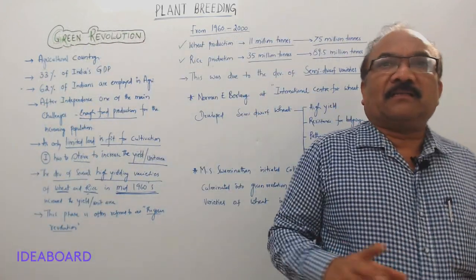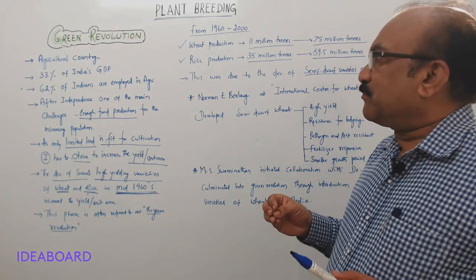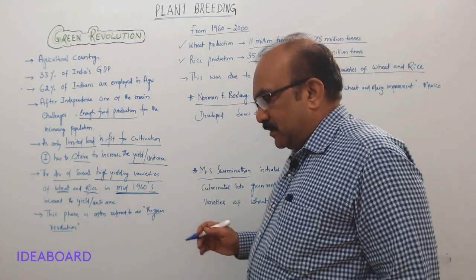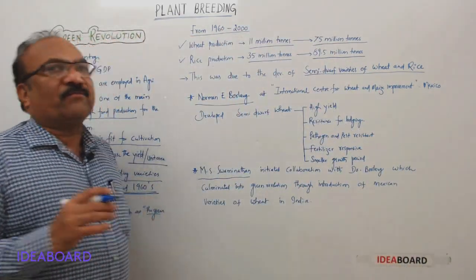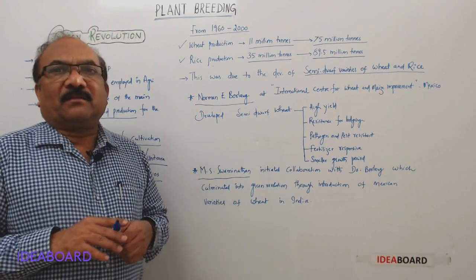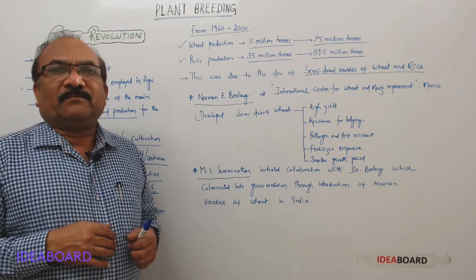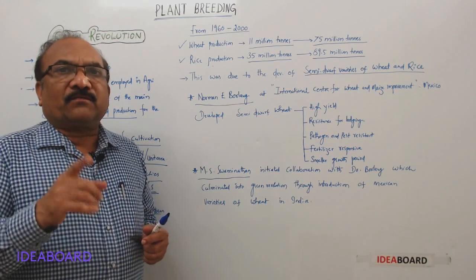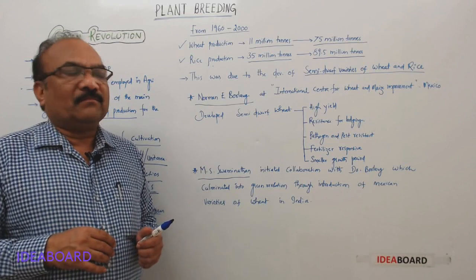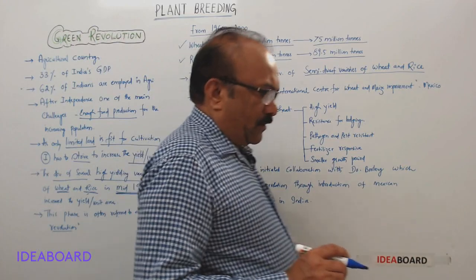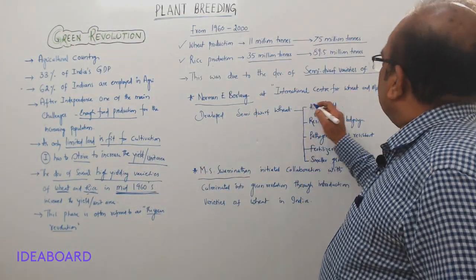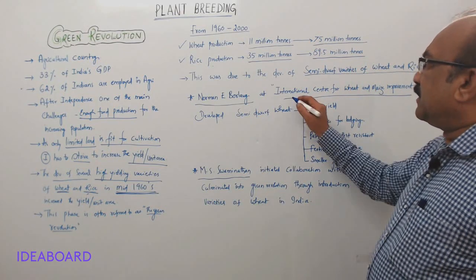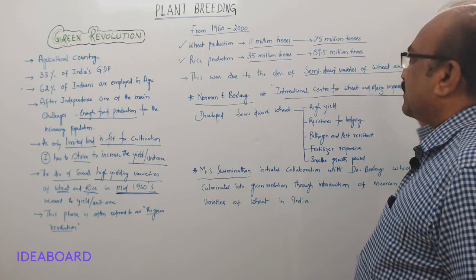How this happened — we have to mention some people. One is Norman E. Borlaug, and another one is M.S. Swaminathan. Norman E. Borlaug is considered the father of the Green Revolution, whereas M.S. Swaminathan is considered the father of the Green Revolution in India. The Green Revolution was first witnessed by two countries — Mexico and India. Norman E. Borlaug worked at the International Center for Wheat and Maize Improvement in Mexico.